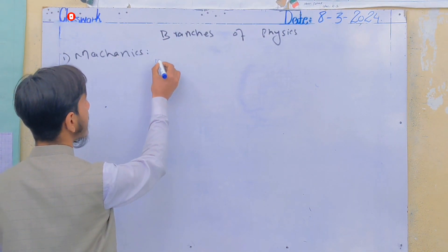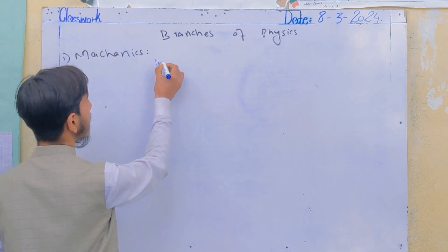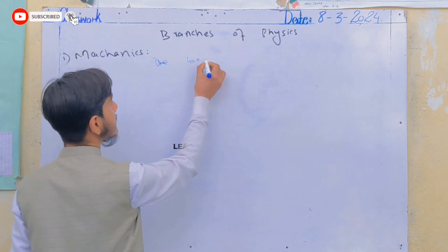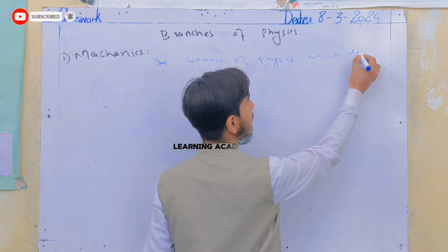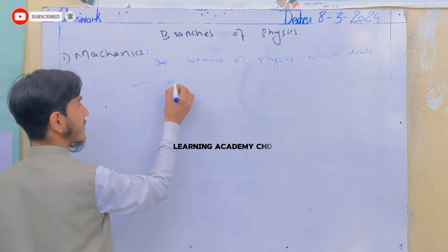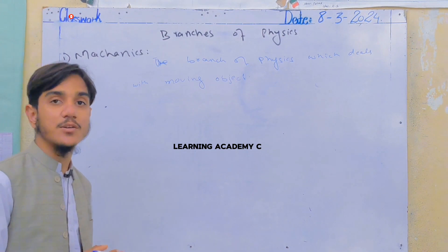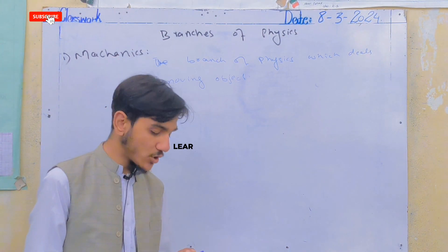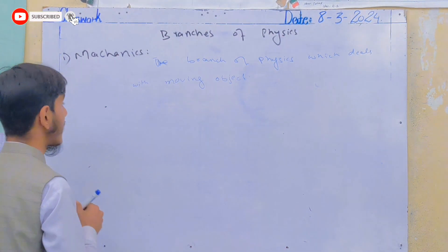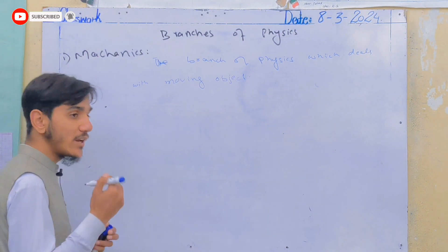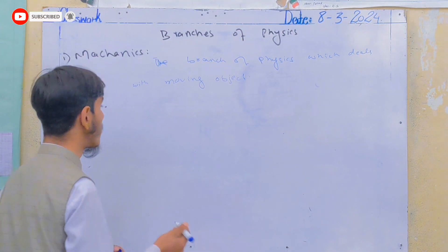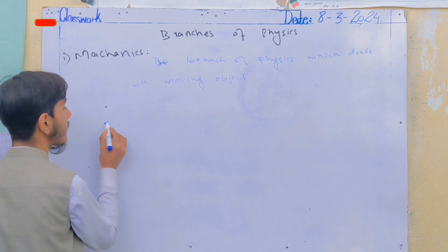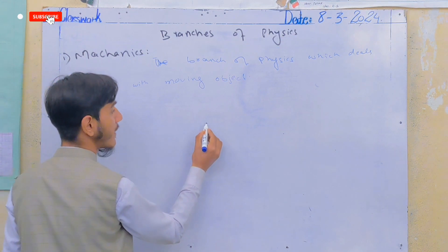Mechanics is the branch of physics which deals with moving objects. If you study this branch of physics, you can study moving objects. If there is a movement or any kind of motion, you can study it under mechanics.